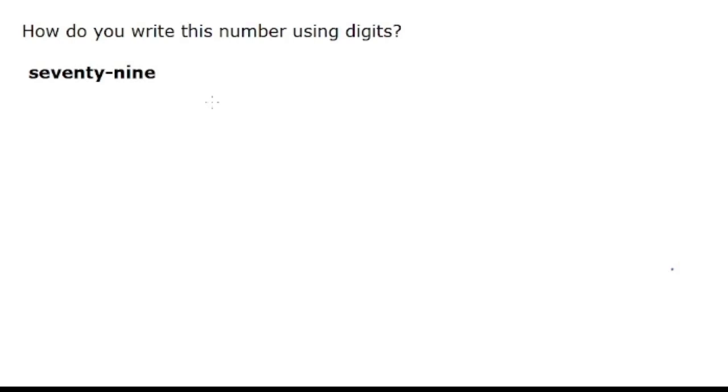Okay, we're going to solve a problem. How do you write this number using digits? So the number is seventy-nine, and we're trying to make those words into a number.